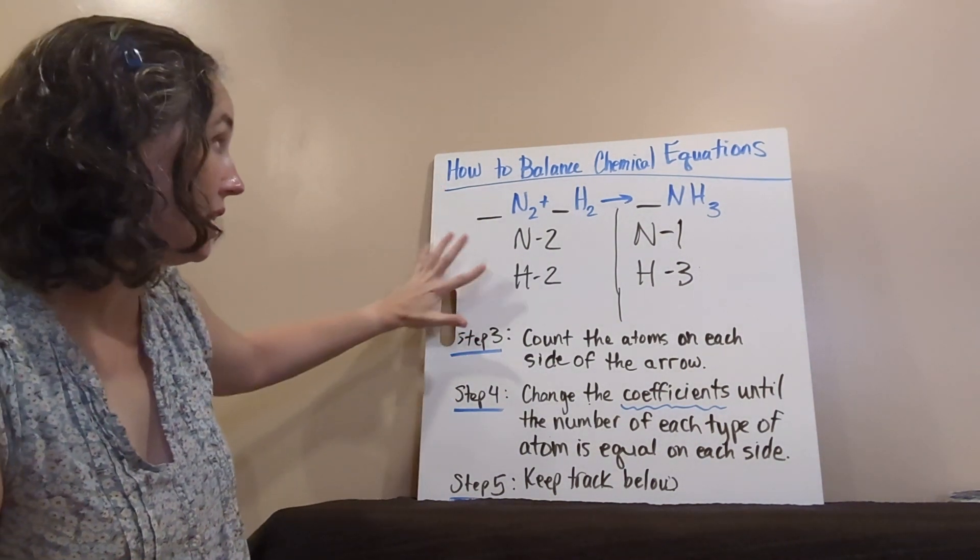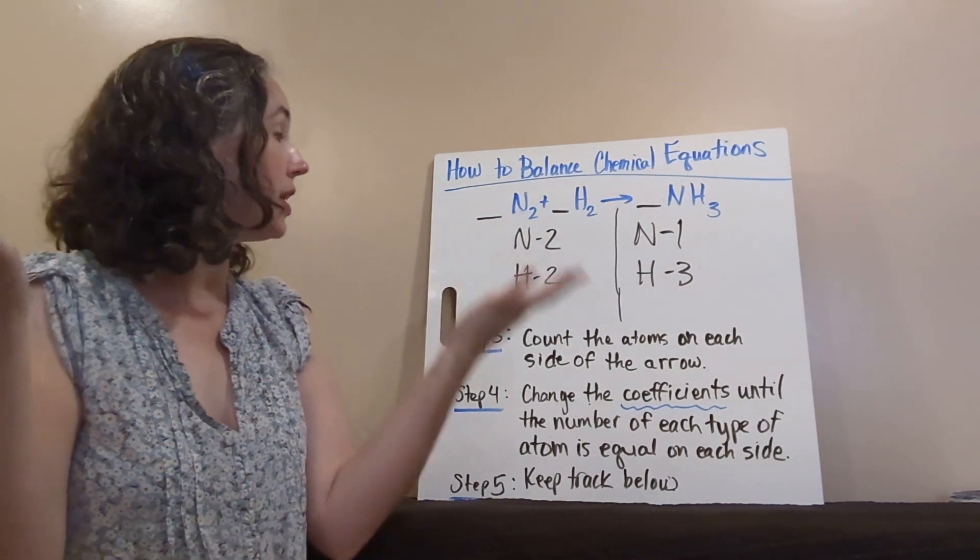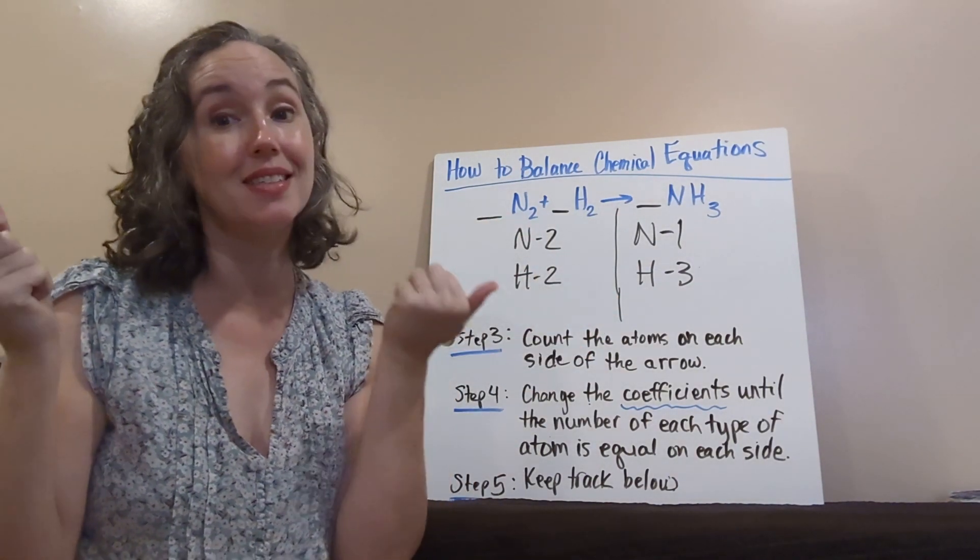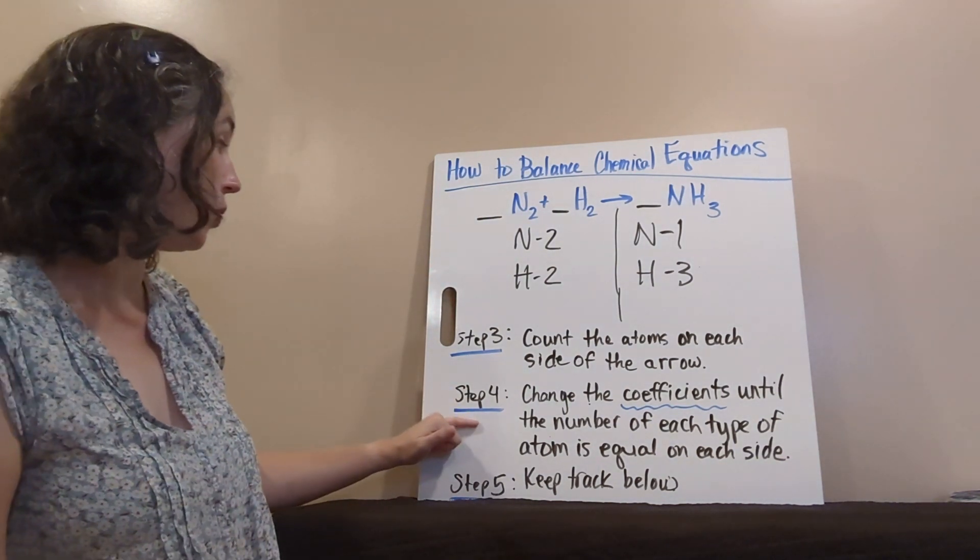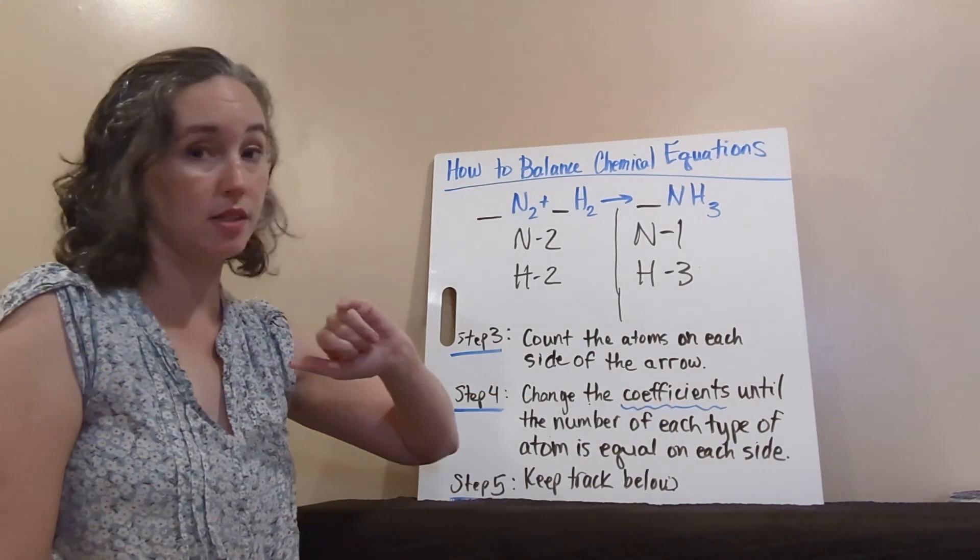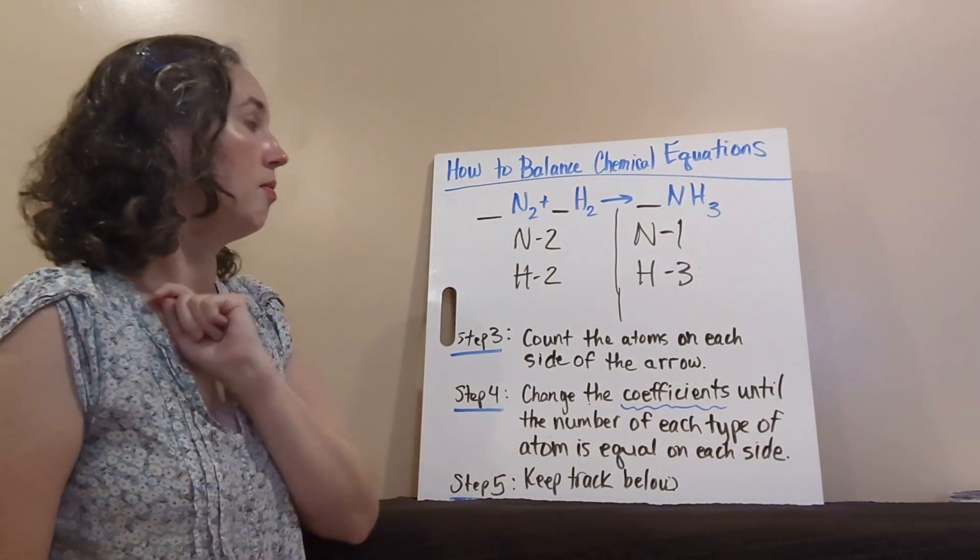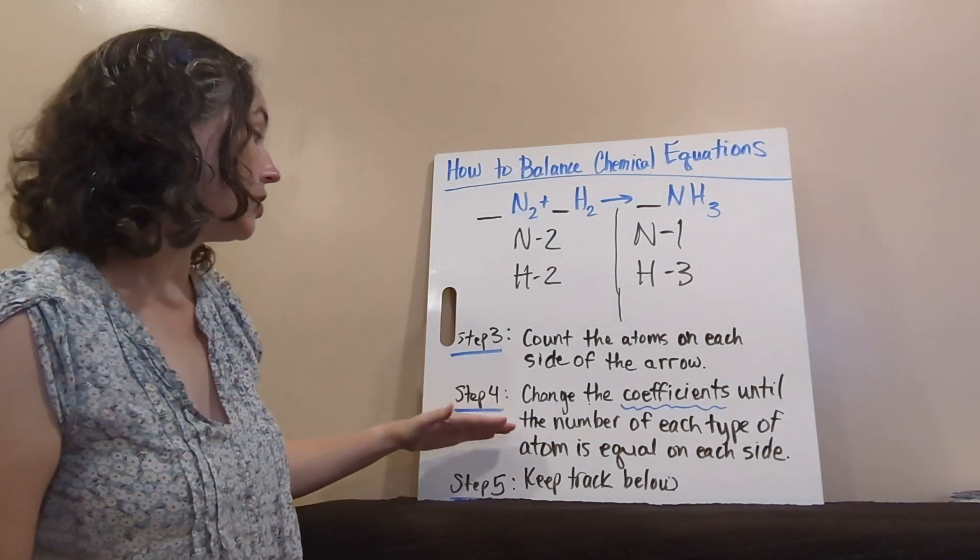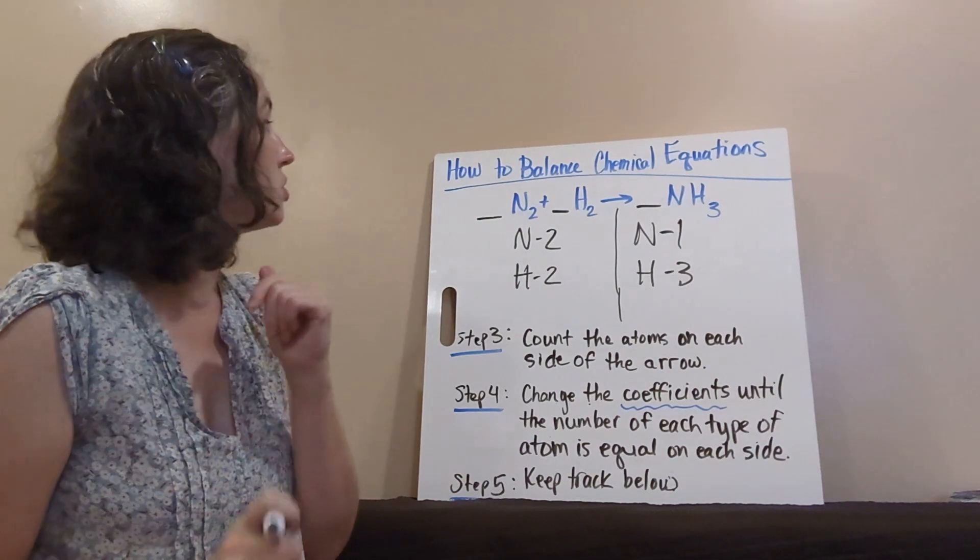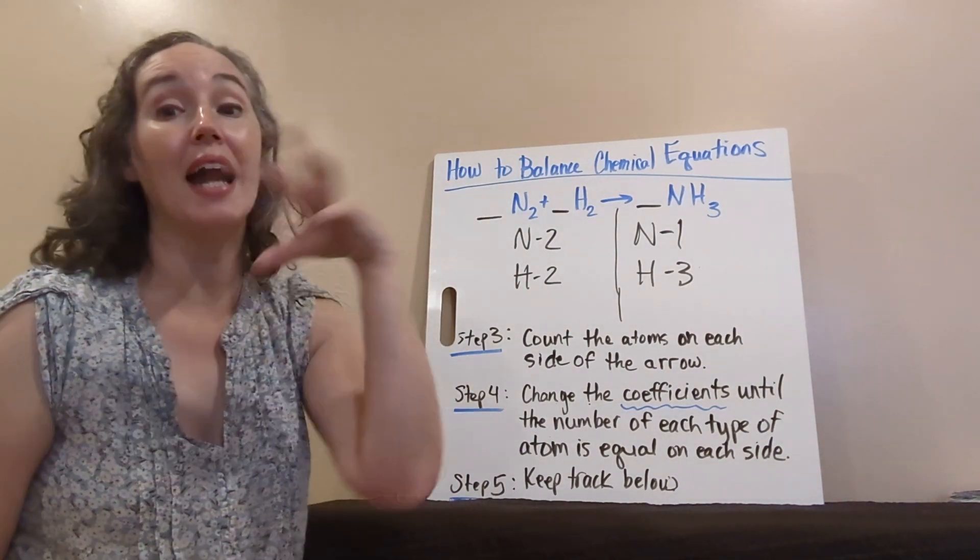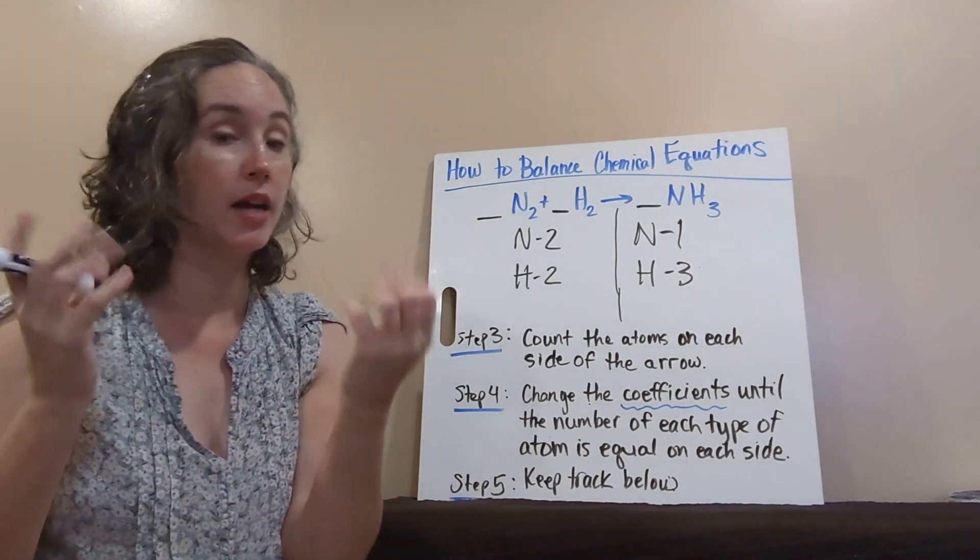Now, we can see, just by looking right across, that neither the nitrogens or hydrogens are balanced in this equation. So, we're gonna need to do step four. Change the coefficients in front of each molecule until the number of each type of atom is equal on each side. So, it's like we're adding molecules until we have the same number of atoms on each side.